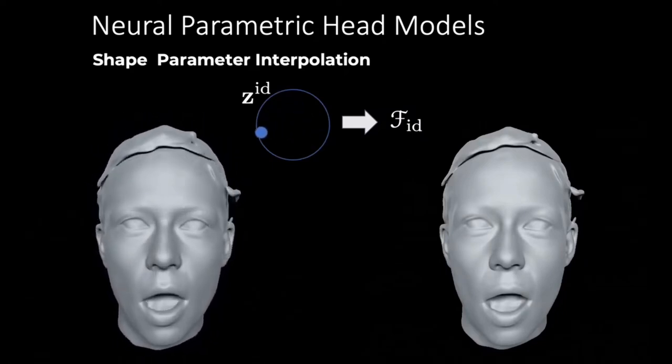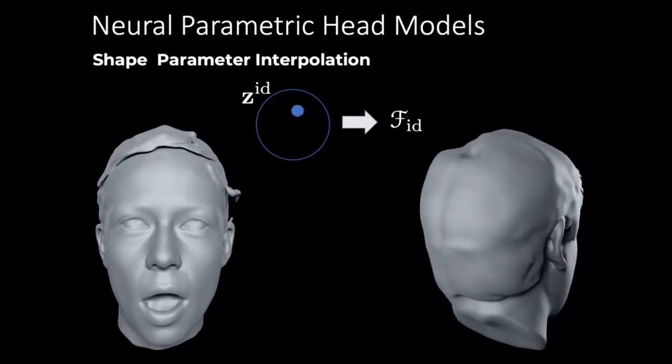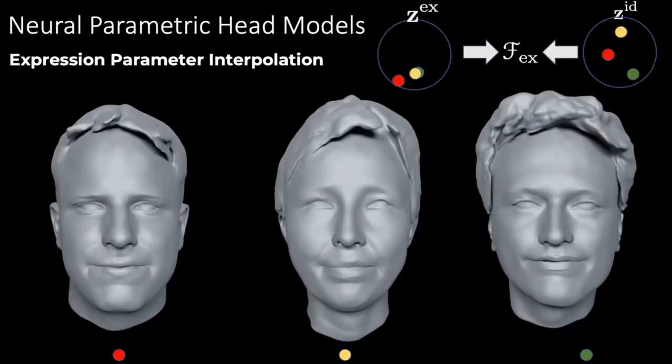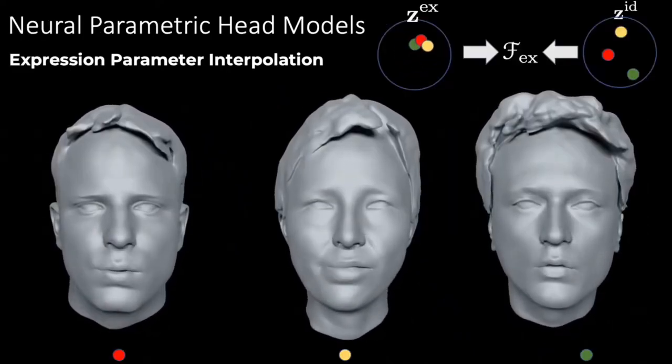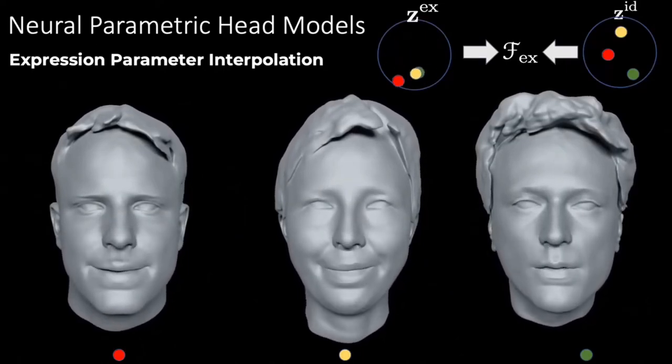A core quality of our model is the ability to represent a wide variety of identities. Here we show interpolations in the learned shape parameter space. Similarly, interpolating between our learned expression codes while keeping the identity parameters fixed yields realistic facial movements while maintaining the identity of the person.